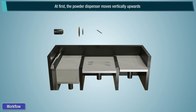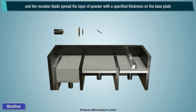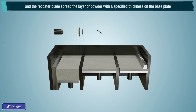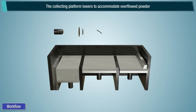First, the powder dispenser moves vertically upwards and the recoater blade spreads a layer of powder with a specified thickness on the base plate. The collecting platform lowers to accommodate overflow powder.